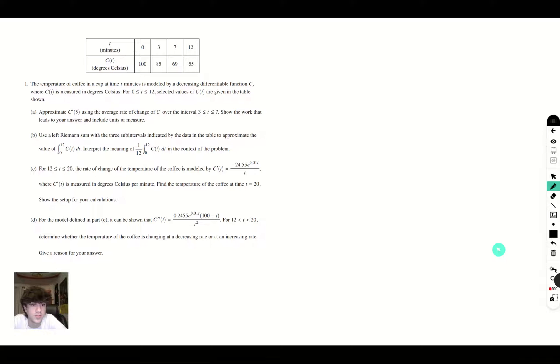Part B asks us to use the left Riemann sum in order to approximate the value of C of T and interpret the meaning of 1 twelfth integral of C of T from 0 to 12. So let's graph the data first.